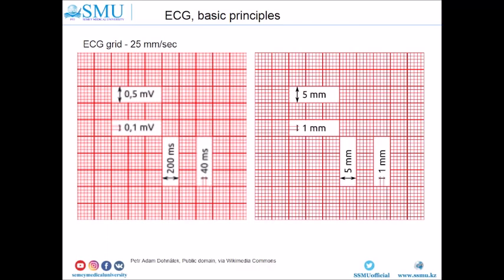During the interpretation of the ECG, the first thing that you should pay attention to is ECG speed. Usually ECG paper has a speed of 25 mm per second. It means that one small box represents 40 ms and one large box includes 200 ms.